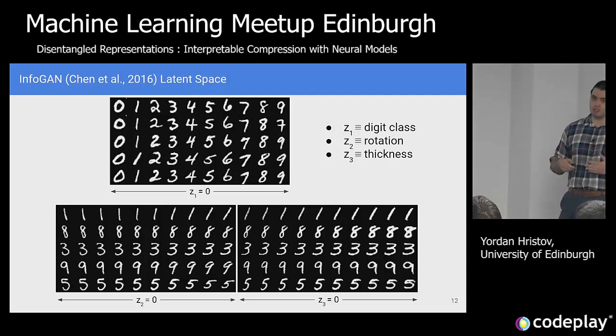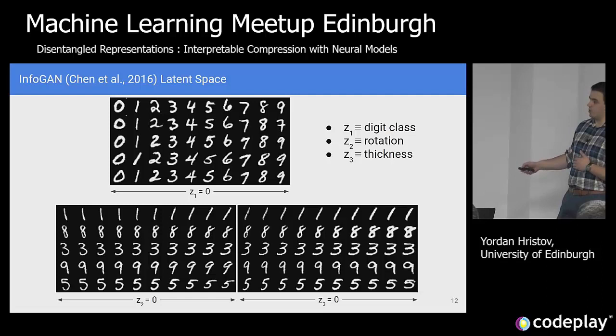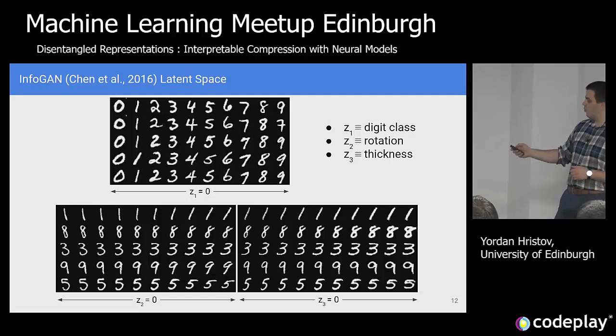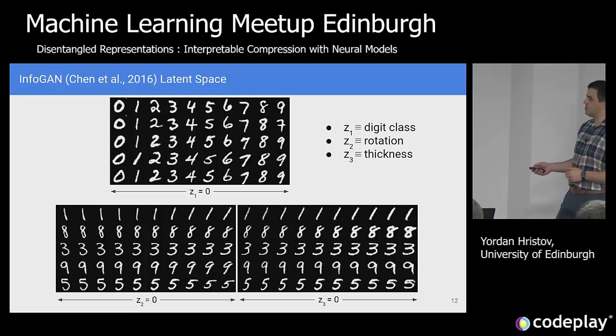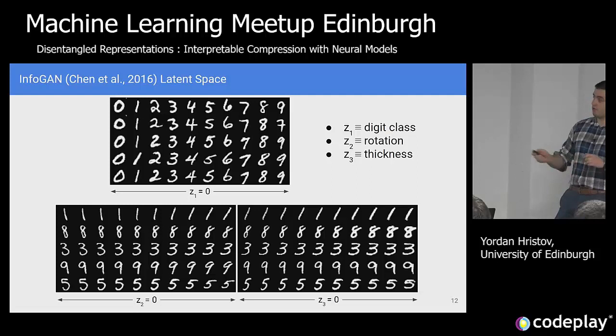If we go back to MNIST and assume we've learned a disentangled representation Z — say Z is three-dimensional — and we perturb Z1, this corresponds to perturbing the class of the digit. If we perturb Z2, this corresponds to how slanted the digit is; Z3 corresponds to how thick it is. The point is that walking the space one axis at a time changes only the attribute that axis is responsible for — it doesn't change anything else. You still get that lower-dimensional representation from the high-dimensional visual input, and now it's also interpretable.